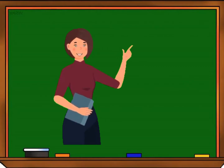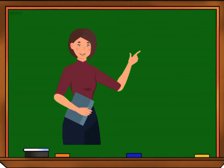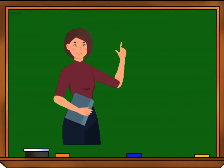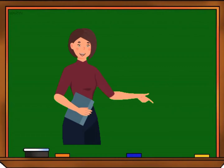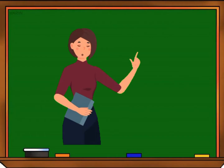Now you know what biodiversity is and its importance to the ecosystem. What about ecosystem — what is an ecosystem, its parts, types, and components? To further understand the ecosystem, we are going to watch a video on what is ecosystem and the types of ecosystem, and after which we will be doing an activity.